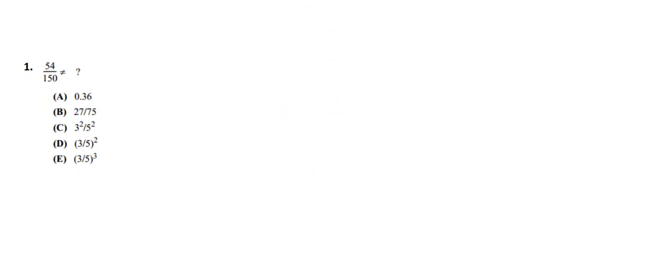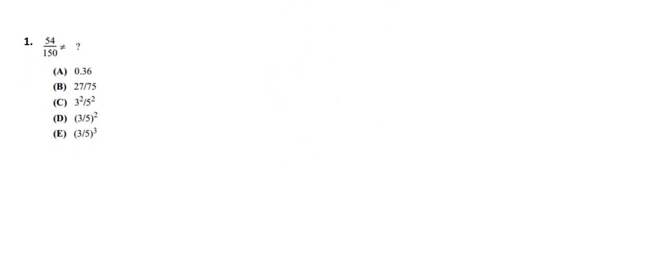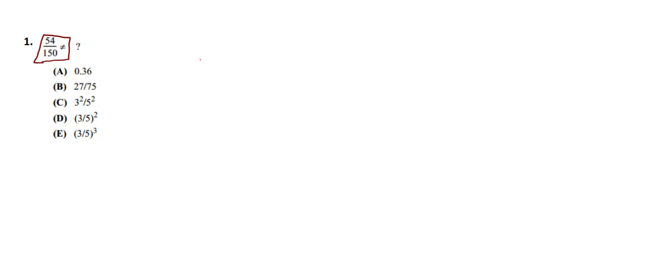Our first sum is based on mathematics — simple calculation — but here we have 54 by 150 with a 'not equal to' sign. If it were equal to, it would be a very simple sum, but here we have 'not equal to'. So we need to consider each one of the options and check which option is not equal to this. Our first option is 0.36.